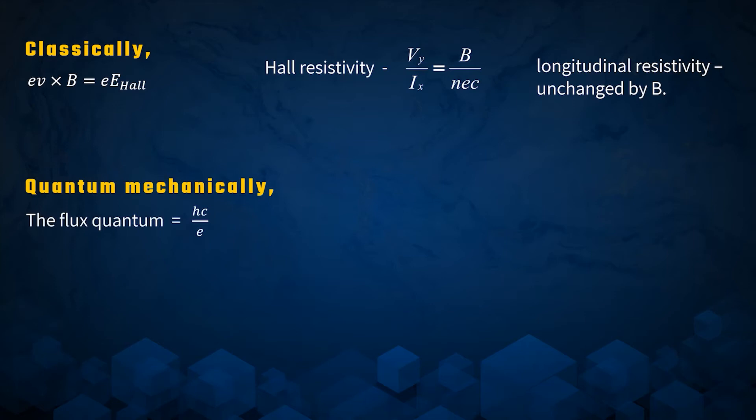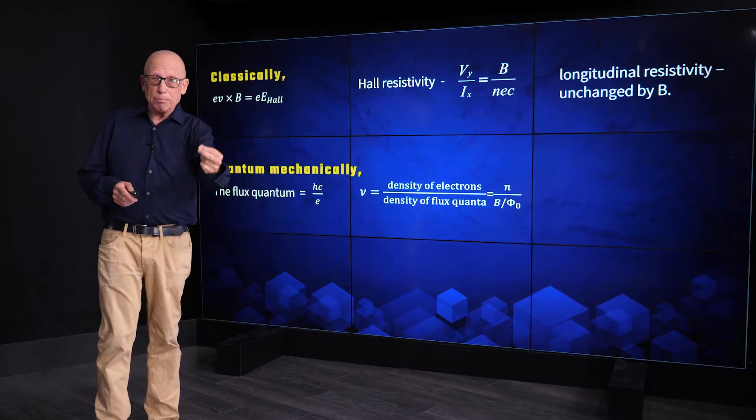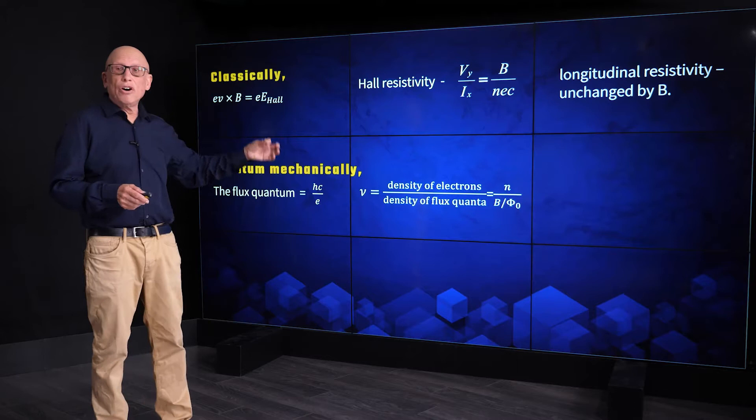Now, we are here for quantum mechanics. So it's the quantum Hall effect. Quantum mechanics, the first thing it does is it introduces two new notions. First is the flux quantum, hc over e, a measure of magnetic flux.